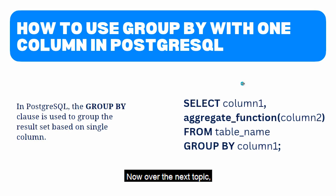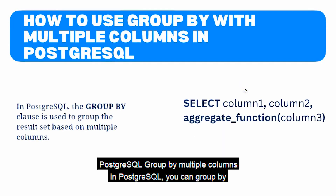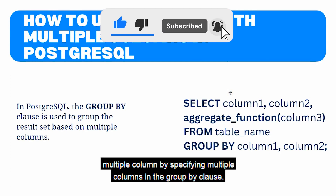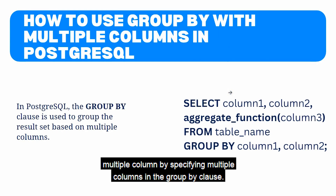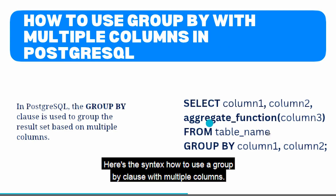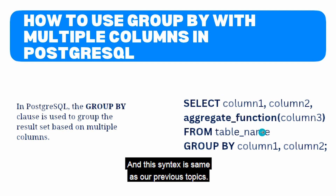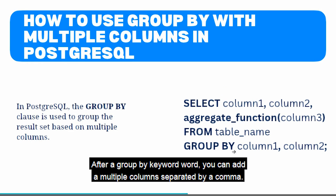Now let's move to the next topic: PostgreSQL GROUP BY multiple columns. You can group by multiple columns by specifying multiple columns in the GROUP BY clause, separated by commas. The syntax is the same as before — after the GROUP BY keyword, add multiple column names separated by commas.